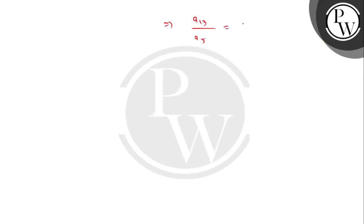9d plus 12d upon 9d plus 4d. This value becomes 21d upon 13d.